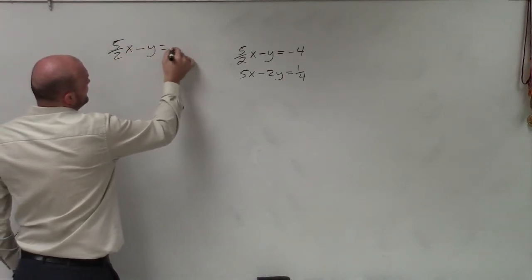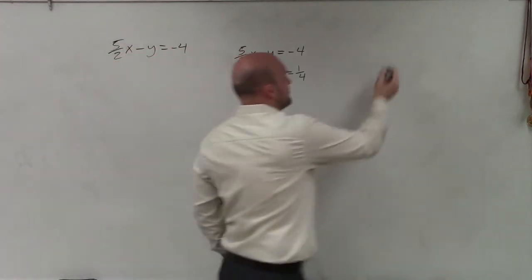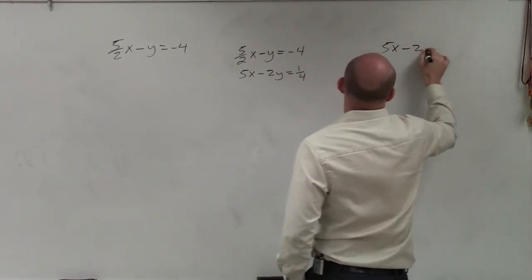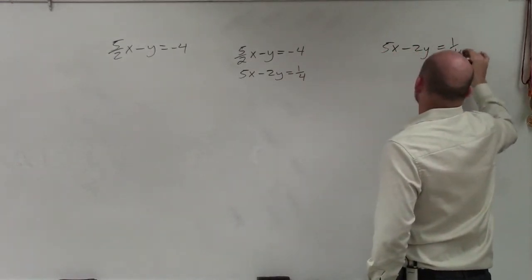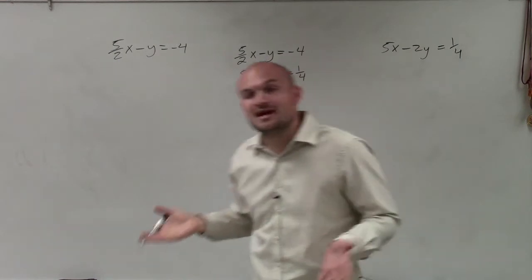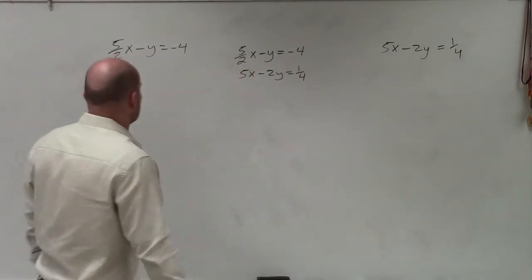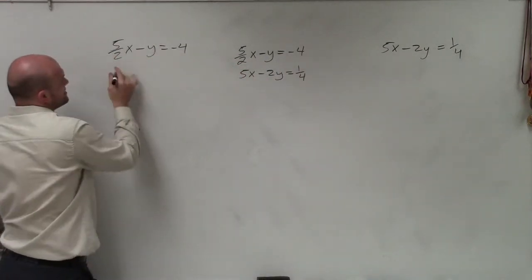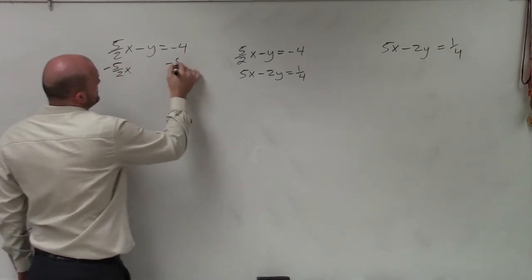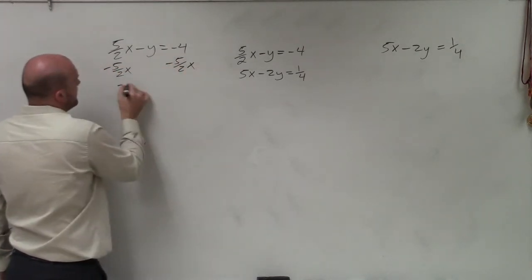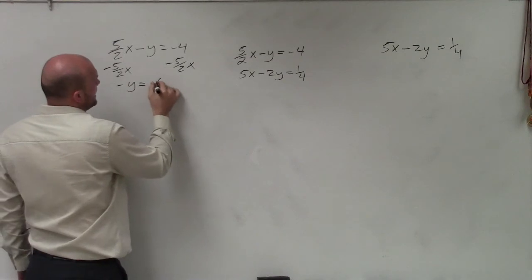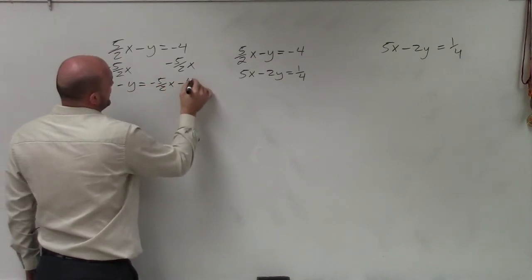Let's get started by setting these both into slope intercept form. That's going to help us put it in a form that we'll know where to get started as far as graphing. So to do that, we need to isolate for our y variable. The first thing we do is isolate this y. I'll subtract 5 halves x on both sides. Therefore, I have negative y equals negative 5 halves x minus 4.